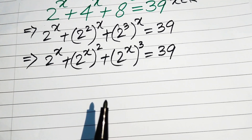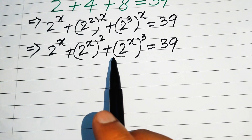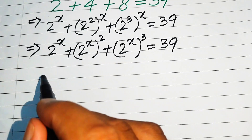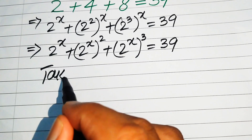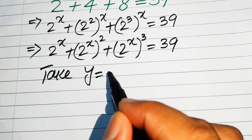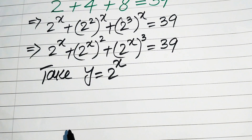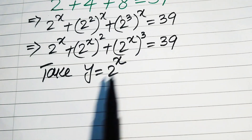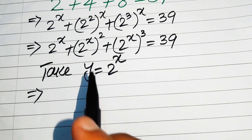You can see that all the terms contain 2 to the power of x, so we substitute y equals 2 to the power of x. When we take y equals 2 to the power of x, our equation becomes a cubic form.